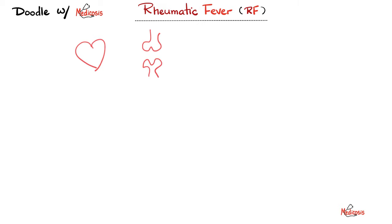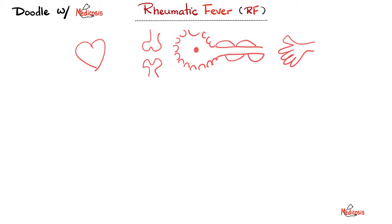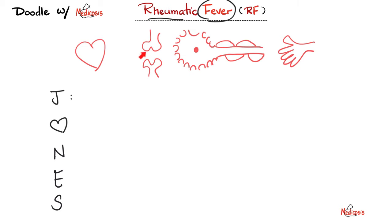Now for signs and symptoms — the Jones criteria. There are major and minor criteria. The major criteria follow the mnemonic JONES. J is for joint disease — migratory and shifting polyarthritis. It might start in the knee, move to the ankle, then the hip, then the shoulder. It is polyarthritis affecting many joints. After resolution of rheumatic fever, it leaves no permanent joint deformity. It is inflammatory in nature.